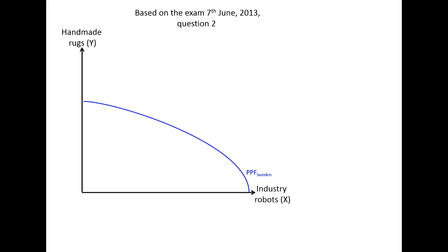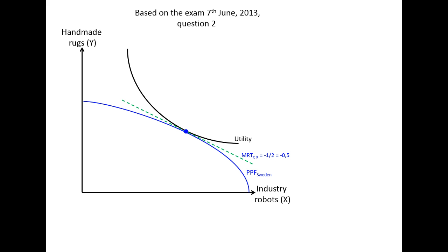When we look at the autarky situation — that is when we don't have any trade — we want to achieve as high utility in society as possible. So the CIC, the community utility curve, would be as high as possible. That indicates we want a tangency between the production probability frontier and the utility function. In this case, the slope of the production probability frontier, the MRT, the marginal rate of transformation, would be approximately minus one-half. So we have to give away one-half rug to be able to produce one more industry robot.